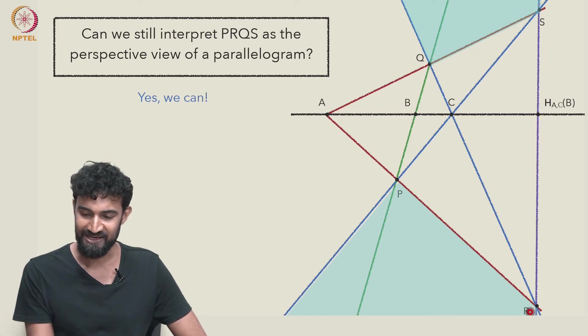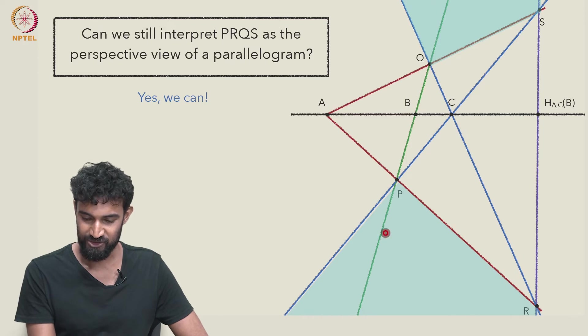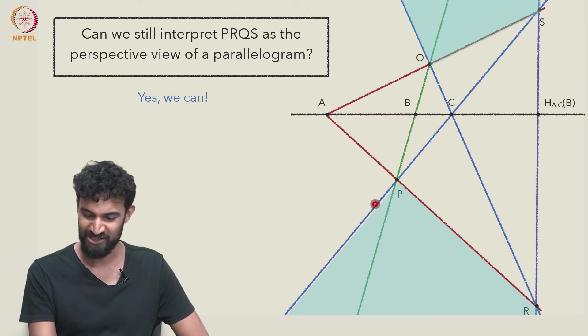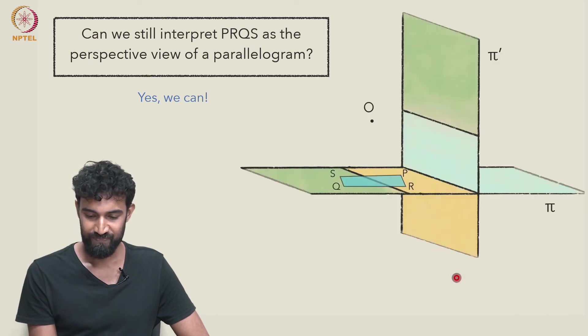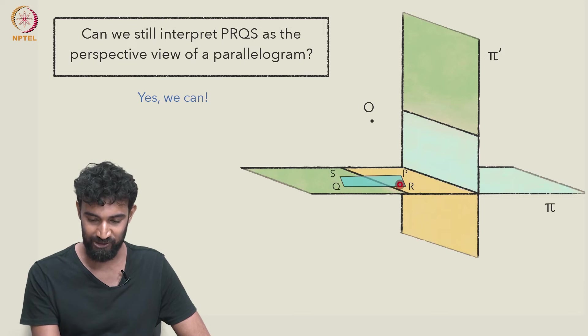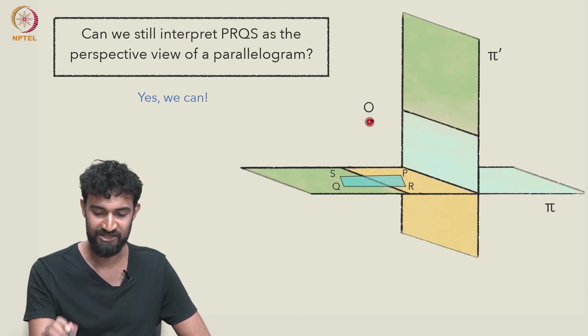These lines are, there's many regions we could consider, but let's just for fun use this one here. And that region is indeed the image of this parallelogram in π under a perspectivity centered at O.